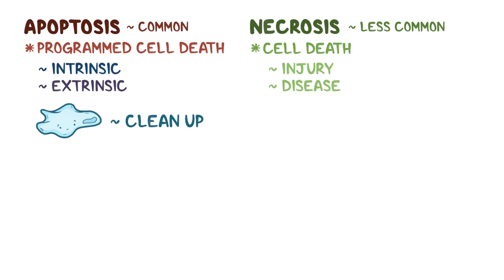Necrosis occurs because of external factors like an infection, as well as internal factors like tissue ischemia. There are three main types of necrosis, and they include primary, secondary, and regulated necrosis.